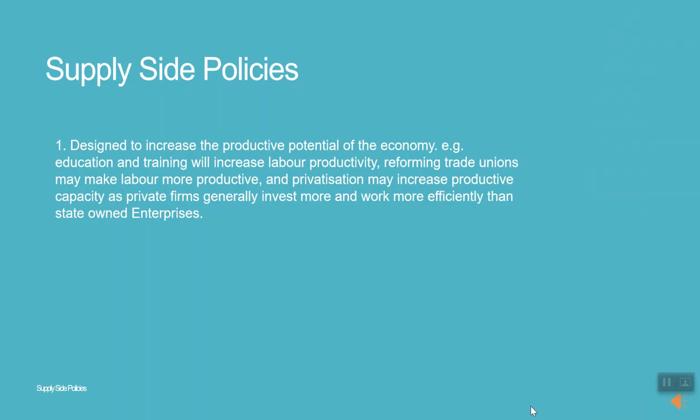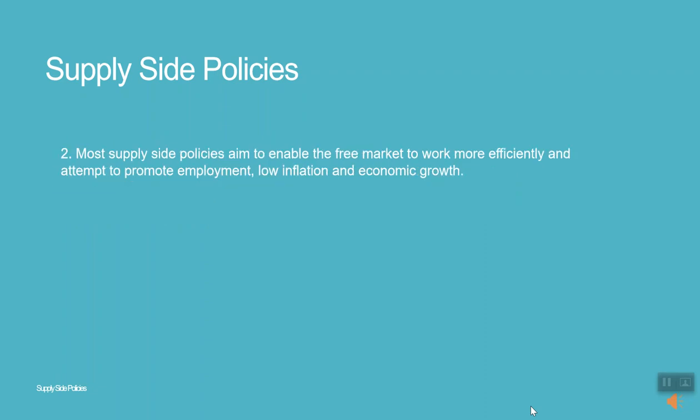Supply-side policies are designed to increase the productive potential of the economy. Education and training will increase labor productivity, reforming trade unions may make labor more productive, and privatization may increase productive capacity as private firms generally invest more and work more efficiently than state-owned enterprises. Most supply-side policies aim to enable the free market to work more efficiently in an attempt to promote employment, low inflation, and economic growth.